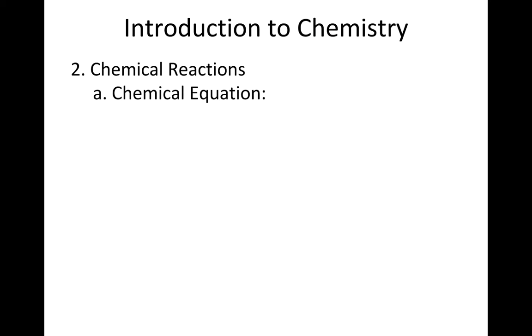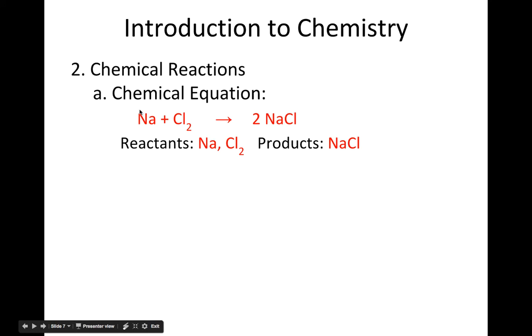Chemical reactions—this is an example of a chemical equation. Go ahead and write that down. So the reactants are everything on the left-hand side: sodium and chlorine are reactants. The arrow is almost like an equal sign—it goes to, it'll make NaCl. So these are the products—the product that is made is NaCl.